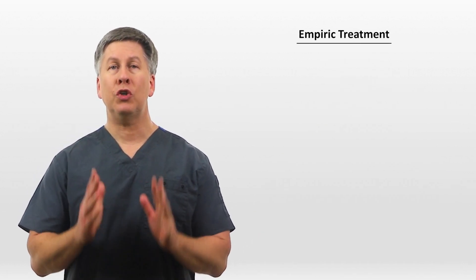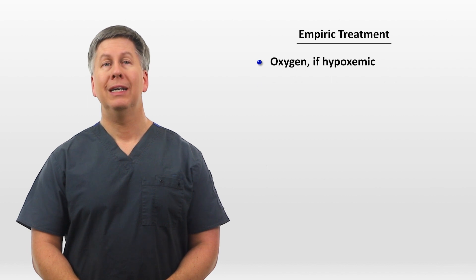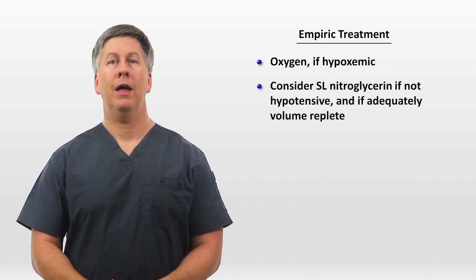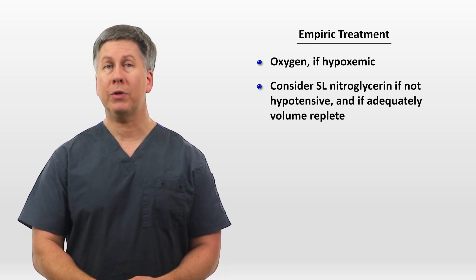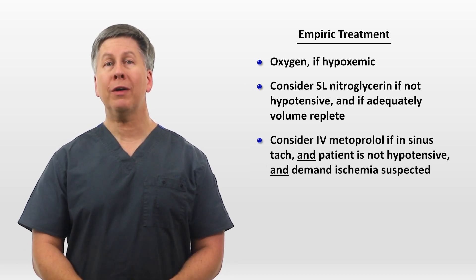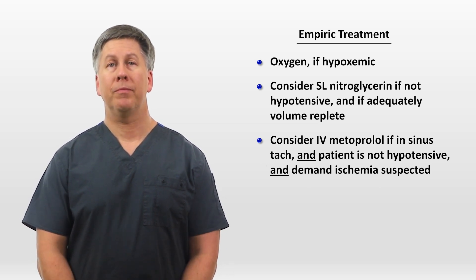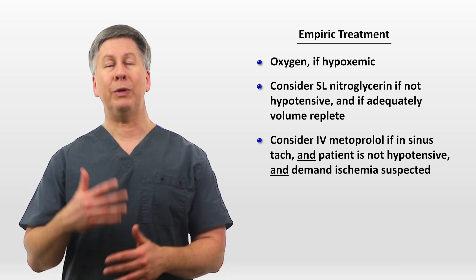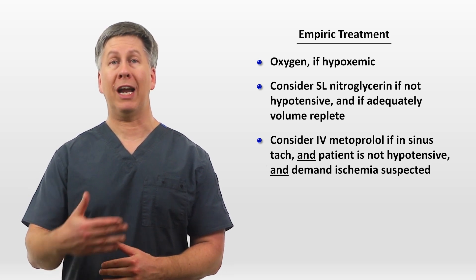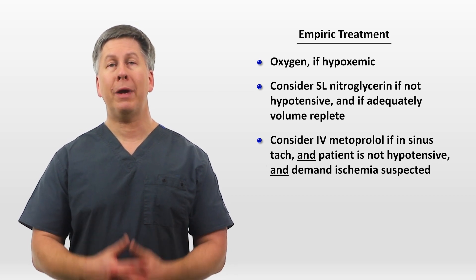Let's talk about empiric treatment — what should you start doing for the patient as soon as you get some data? Give oxygen if they are hypoxemic. Consider sublingual nitroglycerin if the patient is not hypotensive and is adequately volume replete, as giving nitro to a hypovolemic patient can trigger pronounced hypotension. Consider IV metoprolol if the patient is in sinus tach, is not hypotensive, and demand ischemia is suspected — if tachycardia is increasing myocardial oxygen demand beyond what the coronaries can provide due to pre-existing stable coronary disease, metoprolol might improve symptoms.